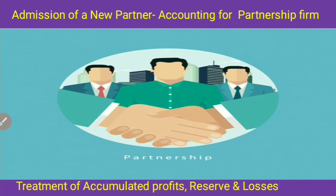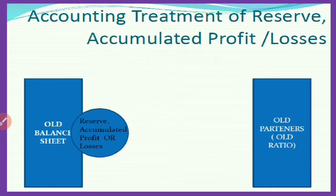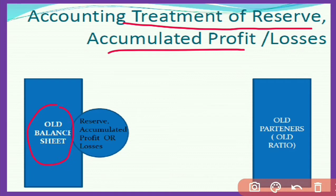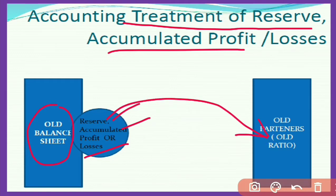Now let's discuss in detail the accounting treatment of accumulated profit, reserve, and losses. At the time of admission of a new partner, the old balance sheet discloses reserve, accumulated profit, or losses. This reserve and accumulated profit or losses are distributed among old partners in their old profit sharing ratio.